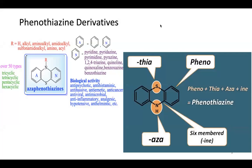Three subfamilies of phenothiazines based primarily on the side chain of the molecule were once the most widely used antipsychotic agents. Aliphatic derivatives, for example chlorpromazine, and piperidine derivatives, for example thioridazine, are the least potent. Thioridazine produces more sedation and weight gain.